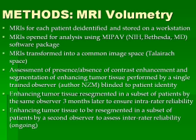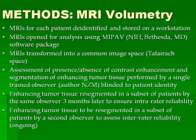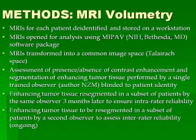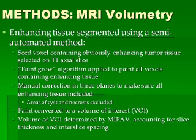MRIs for each patient were de-identified and stored on a workstation, then opened for analysis using the MyPath freeware software package from the NIH. The MRIs were transformed into a common image space to correct for variations in head size and position. There was an assessment of the presence or absence of contrast enhancement and segmentation of enhancing tumor tissue by a single trained observer, blinded to patient identity and tumor grade. Enhancing tumor tissue was resegmented in a subset of patients three months later to ensure intra-rater reliability, and the semi-automated protocol is depicted on the next few slides.